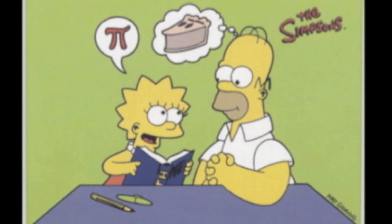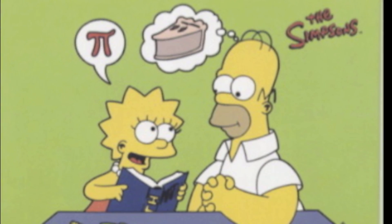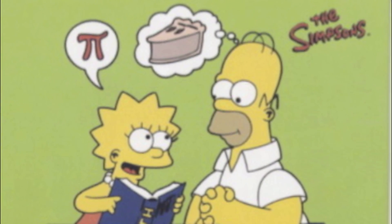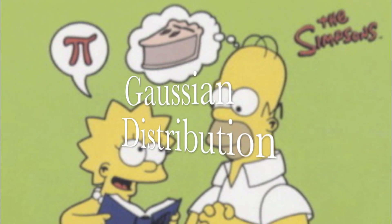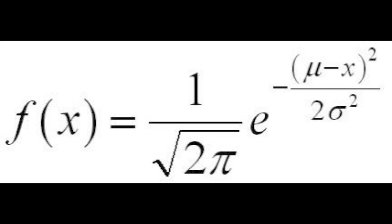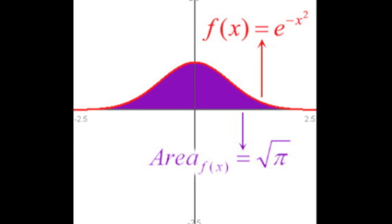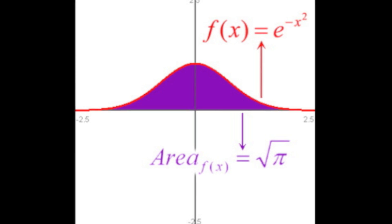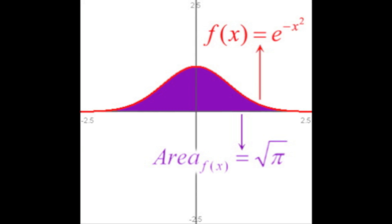Pi is found in more than circles, however. In probability and statistics, oftentimes the distribution of experimental results around a mean value has a particular shape — a Gaussian distribution, or a bell-shaped curve. This distribution can be found by a function that includes Pi, and the area under the curve of this shape can be found by integrating e to the minus x squared between negative infinity and infinity, and gives us an answer of the square root of Pi.